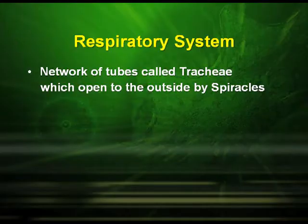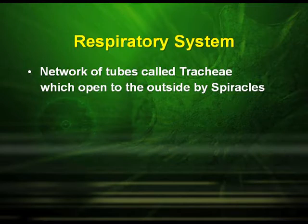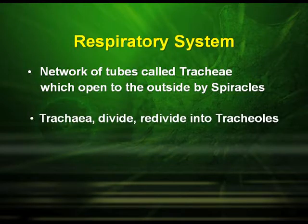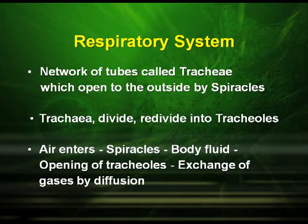The respiratory system of cockroach consists of a network of tubes called trachea, which open to the outside by spiracles. These trachea divide and re-divide into tracheoles. Air enters through the spiracles into the body fluid and then to the openings of the tracheoles, bringing about the exchange of gases by diffusion.